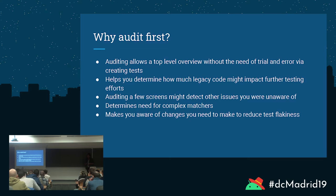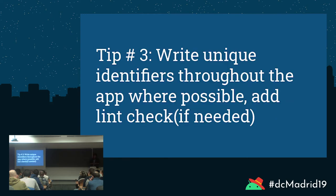The audit also determines the need for complex matchers. In an ideal world, you can use one or two matchers to find a specific element on screen. If you find you're using three, four, or five matchers, that's not ideal — it's more code, more to maintain, and a lot more likely to get flaky or unstable. So the audit allows you to know what changes you need to make.